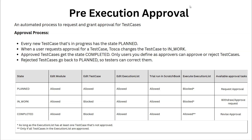Only users defined as approvers can approve or reject test cases. Any rejected test cases will go back to the planned state, so testers can correct them and then request approval again.